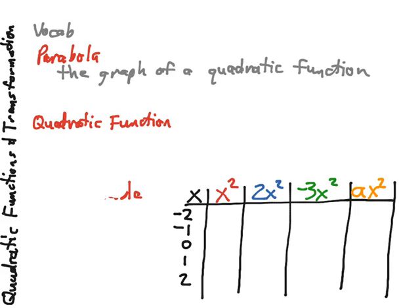These are U-shaped graphs, and if certain characteristics are in play, they will open up. If other characteristics are in play, they will open down. The quadratic function is any function that can be written in the form f(x) = ax² + bx + c, where a is not zero. So our highest exponent needs to be a squared value.